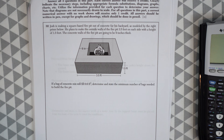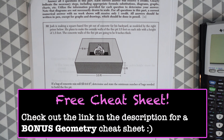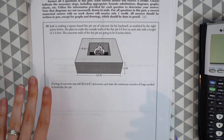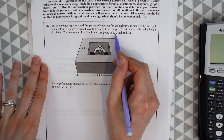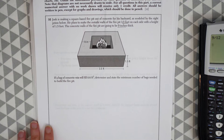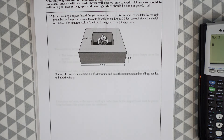Josh is making a square-based fire pit out of concrete for his backyard, as modeled by the right prism below. He plans to make the outside walls of the fire pit three and a half feet on each side, with a height of one and a half feet. The concrete walls of the fire pit are going to be nine inches thick. Be careful here — we're dealing with both inches and feet, two different units of measurement.